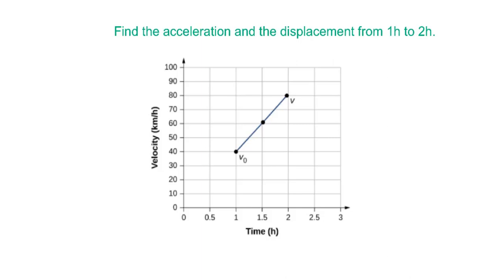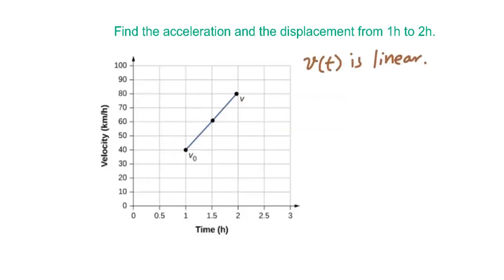From the given graph, you could say the velocity is a linear function. As we know, acceleration equals the derivative of velocity. Since the velocity is a linear function, therefore acceleration will be the slope.